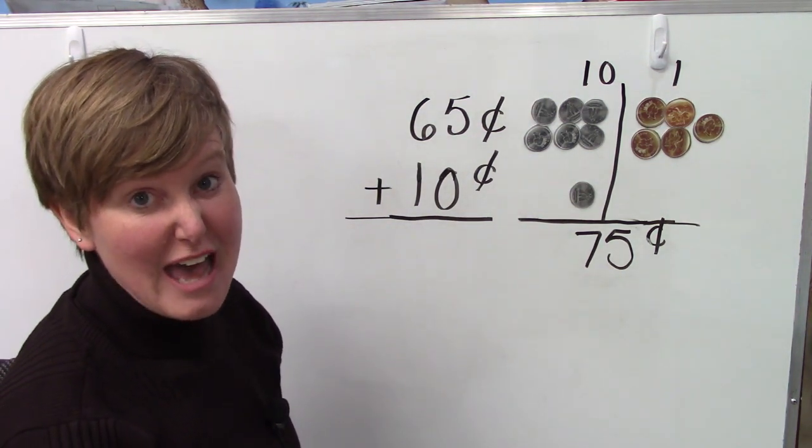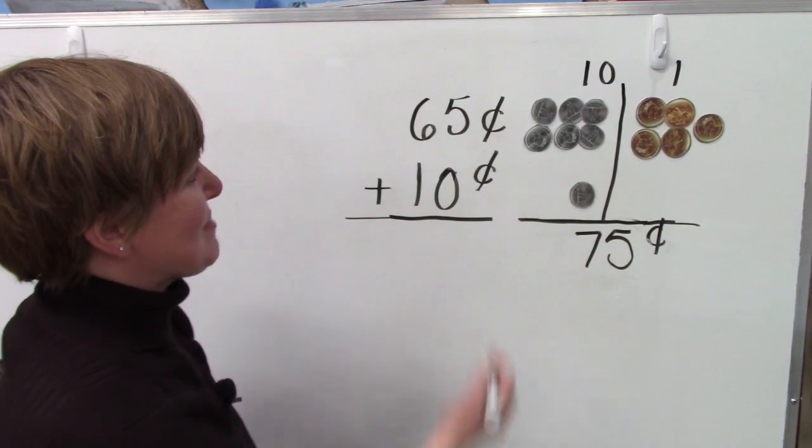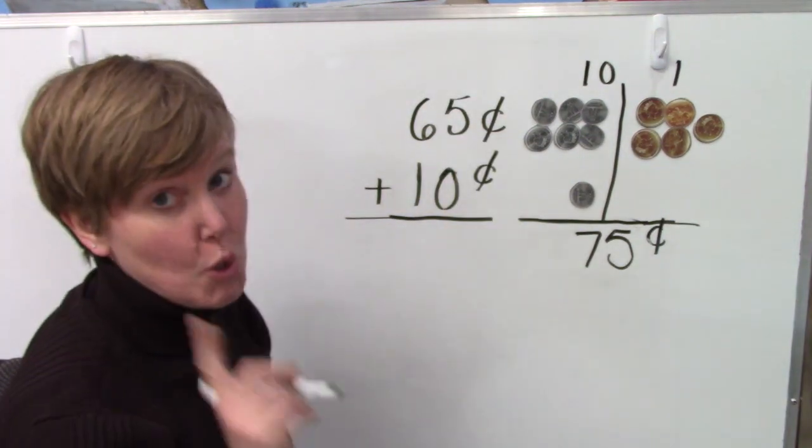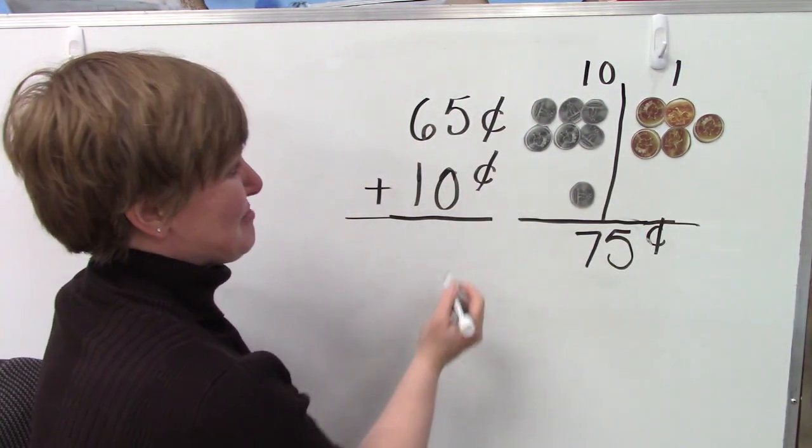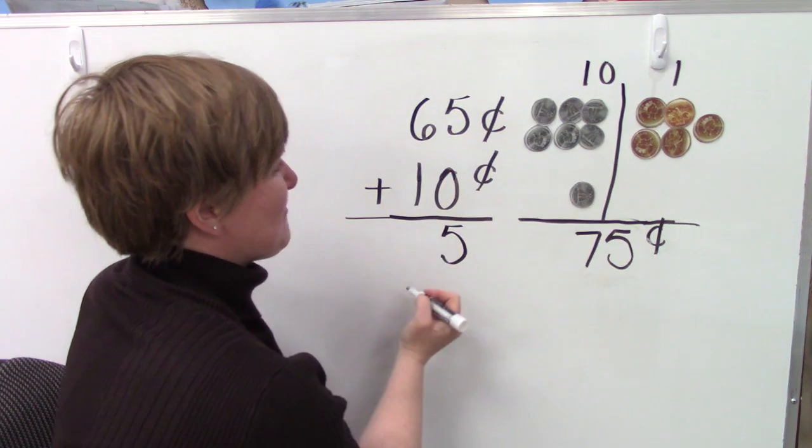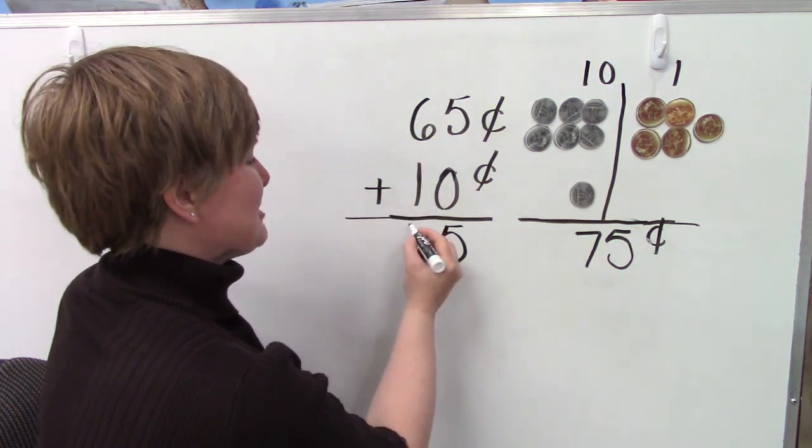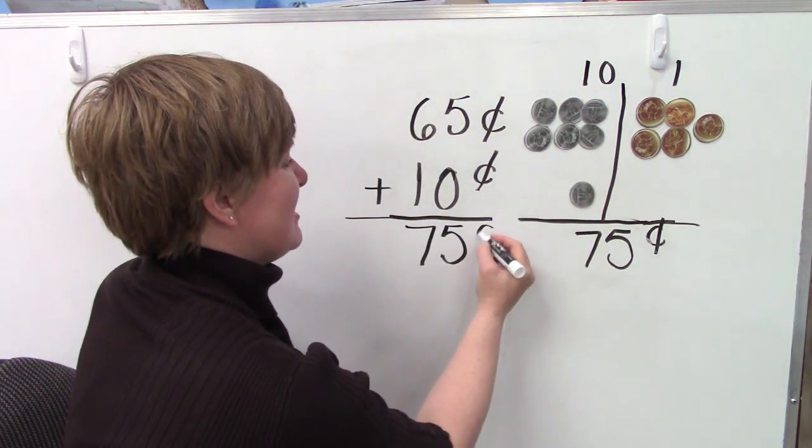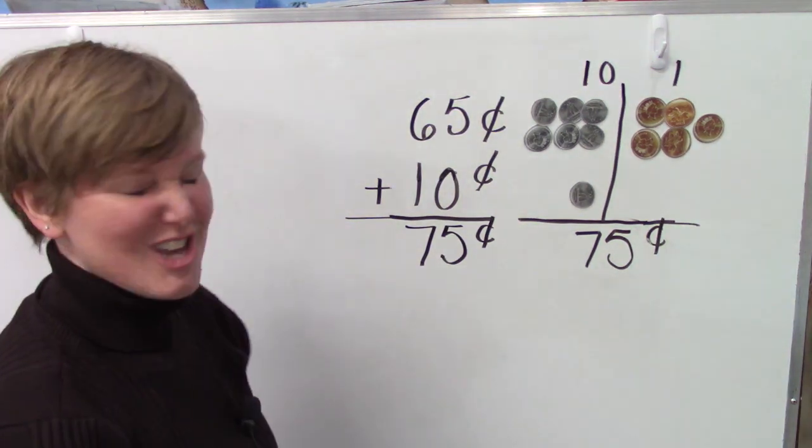Let's try that here with our addition problem. We're going to start in the ones place. 5 plus 0 is 5. And 6 plus 1 is 7. 75 cents.